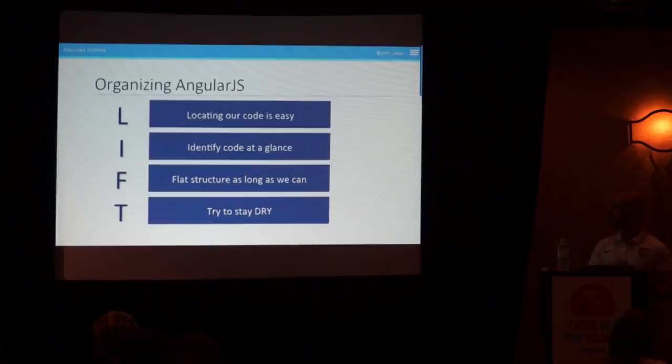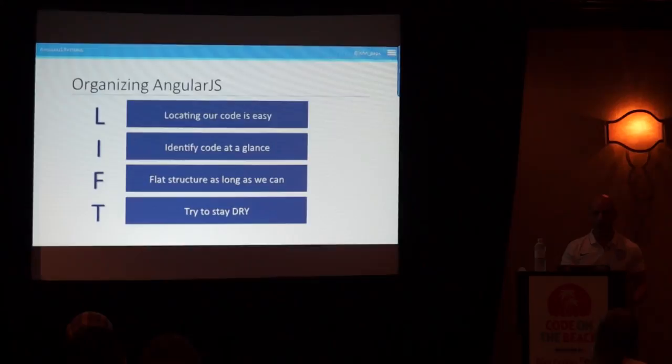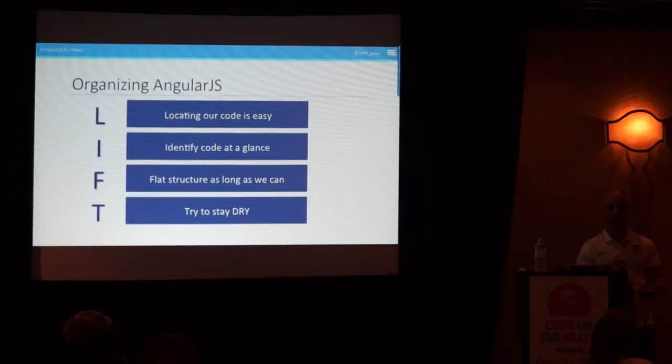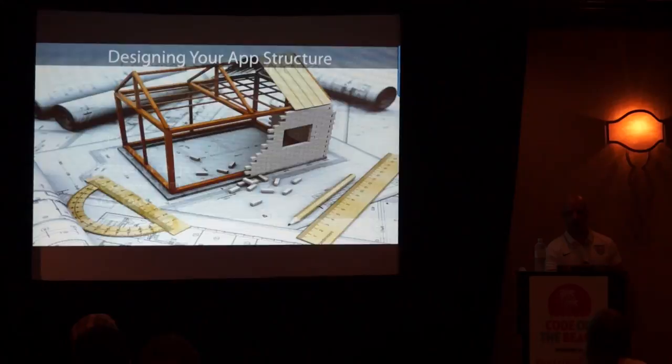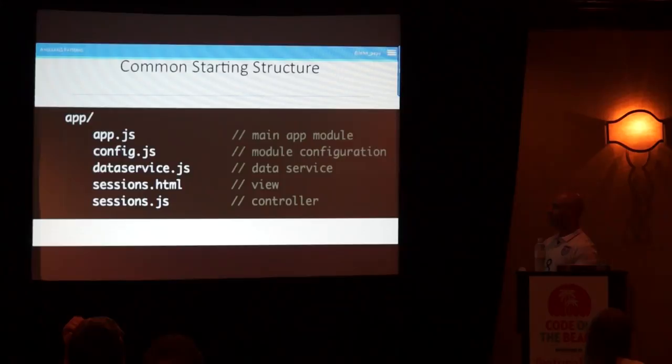This all follows what I call LIFT — locating your code and identifying your code. These are the two biggest things I look for when reviewing codebases. A lot of my job is pair programming, and if I can go in quickly and identify what's going on, it makes life easy. Here's a common demo starting structure: app.js as your main module, a service to get data, and a view and controller. Pretty simple.